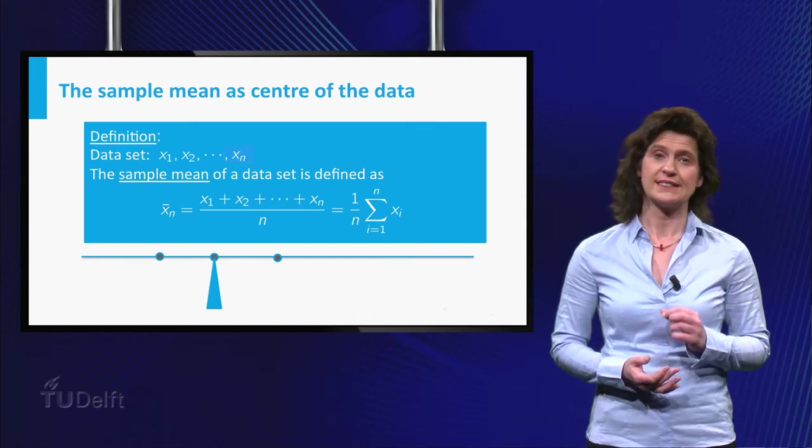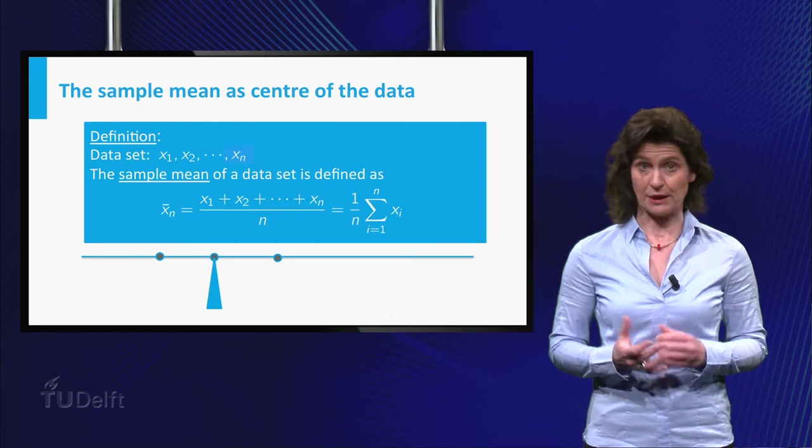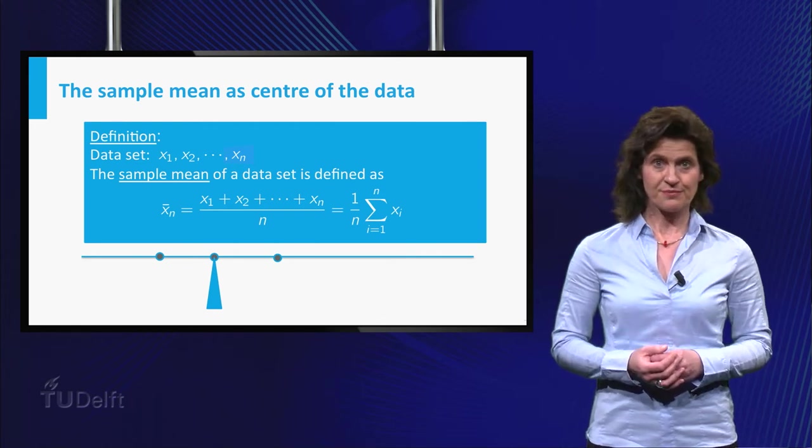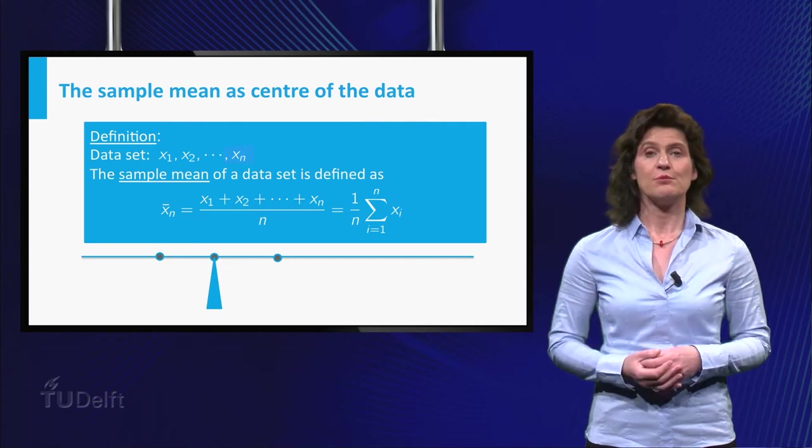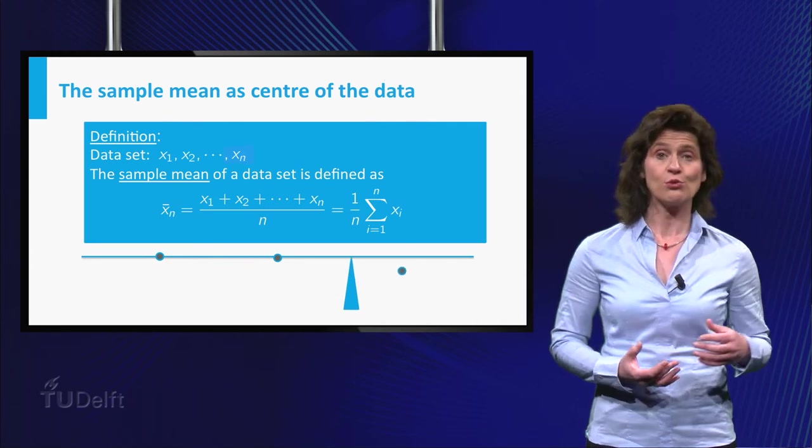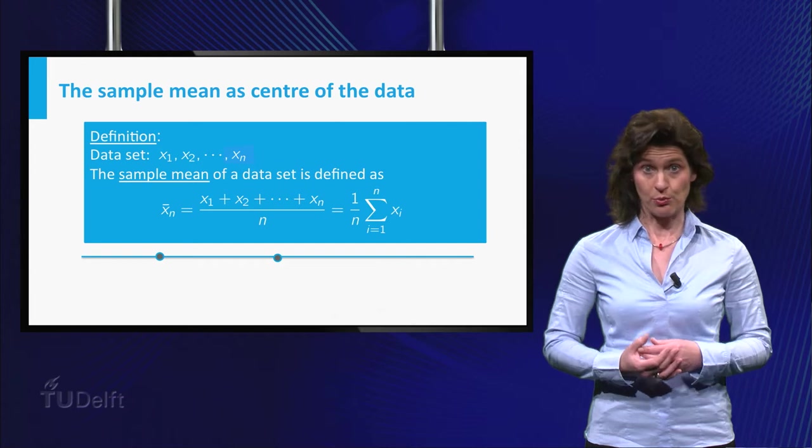The mean is notorious for its sensitivity to only a few bad data points. For instance, if one point is wrongly recorded, say much too high, then the mean value of the data will also move to the right with that one point.